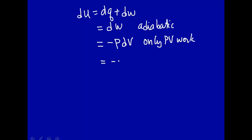So this would just be equal to -nRT over V. That's what pressure is for an ideal gas, times dV. And this, we're making the assumption we have an ideal gas. So we can substitute in what P is, minus nRT over V.